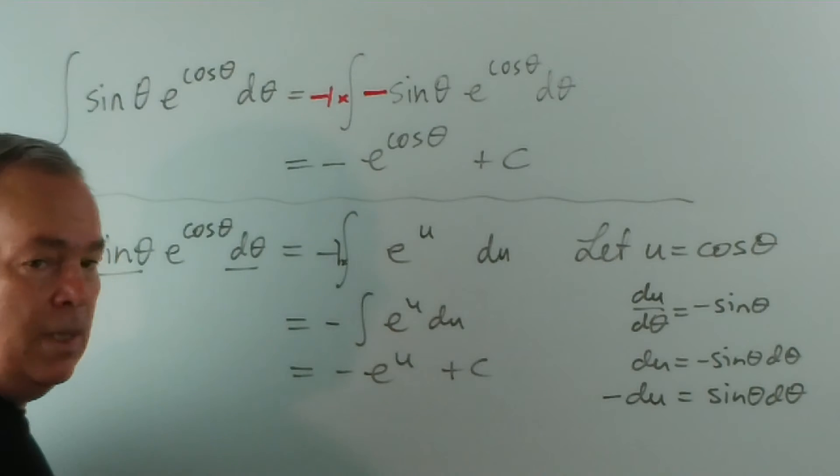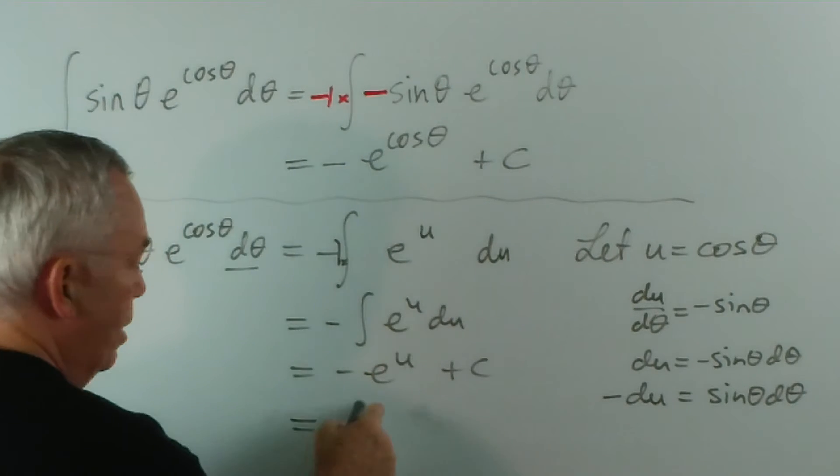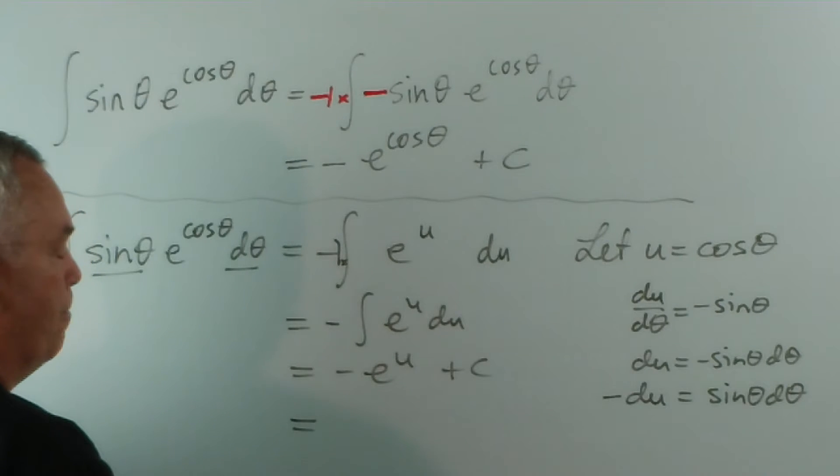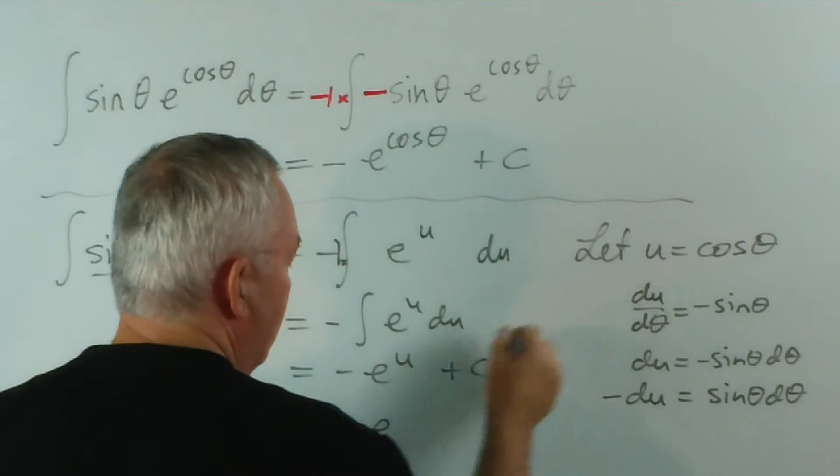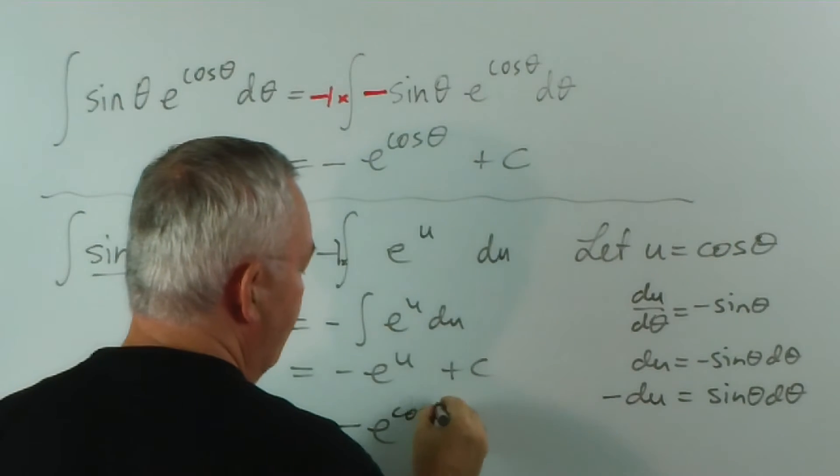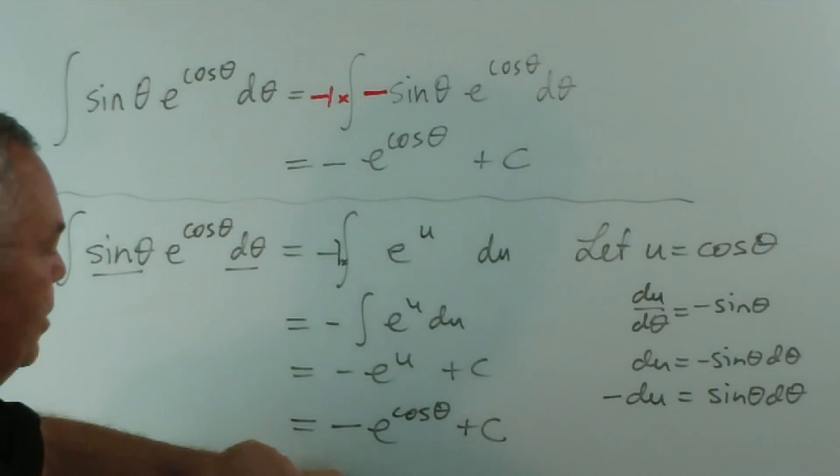Because the integral of e to the x dx or e to the y dy or e to the u du is simply the same exponential, which is minus, and then substituting back in, e to the cos theta plus c. Same result again.